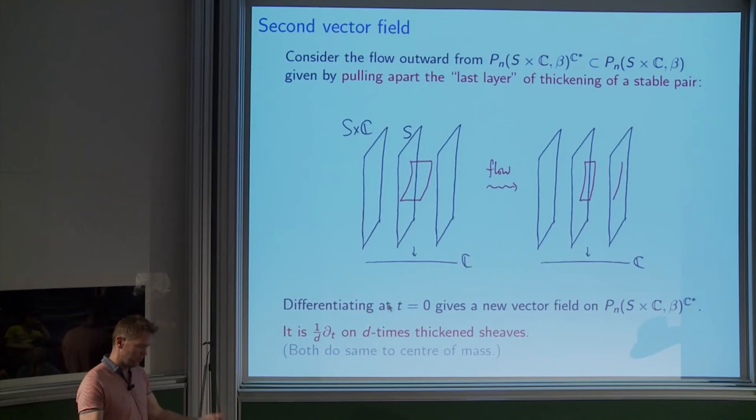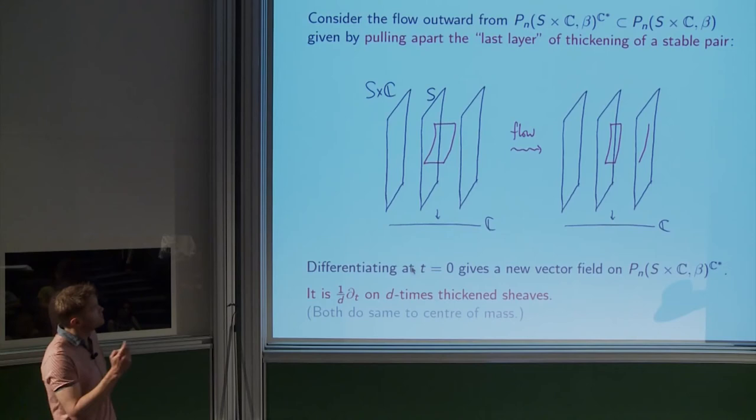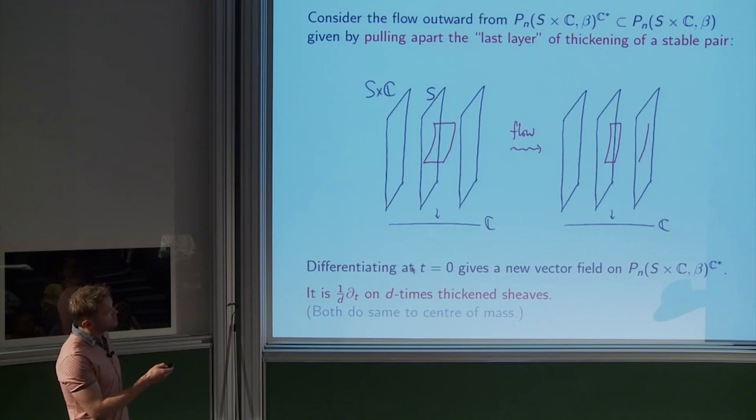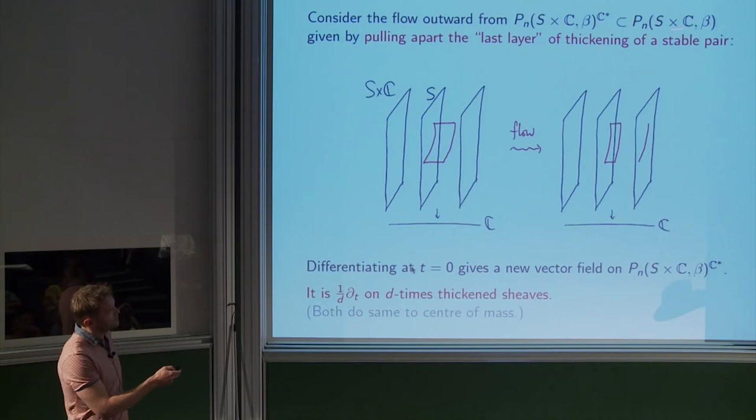We can forget everything that went before — I just need to do a stable pair calculation. The KKV formula gives me a conjecture about what I get when computing stable pairs on this guy. One advantage of stable pairs over Gromov-Witten theory is that it has something called a symmetric obstruction theory. Roughly: vector fields on the moduli space are dual to obstructions. We used that before when we took the reduced theory — you translate along the C direction and that's dual to the obstruction we removed.